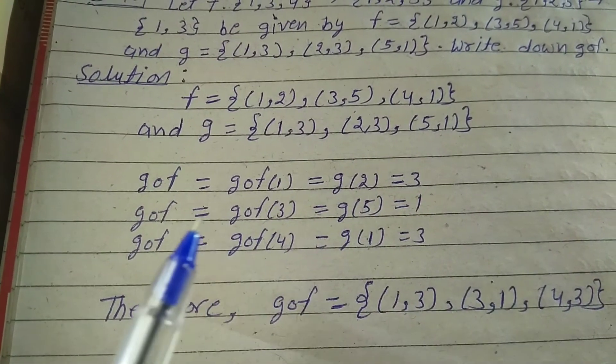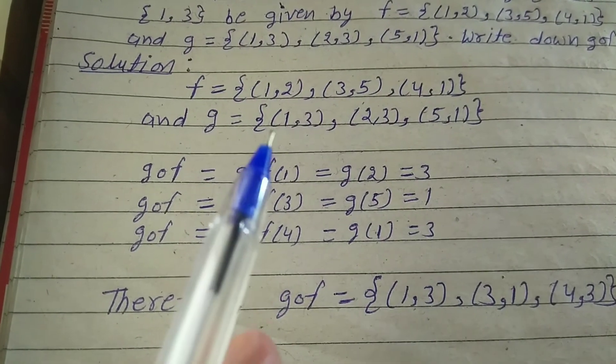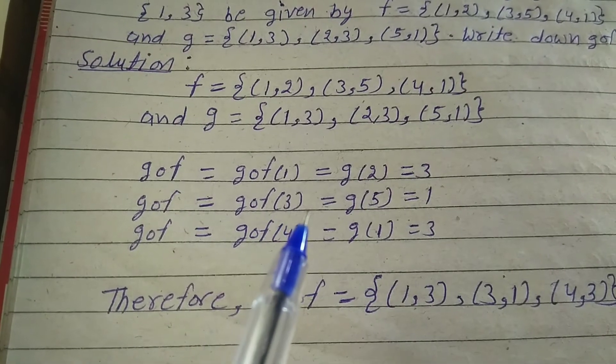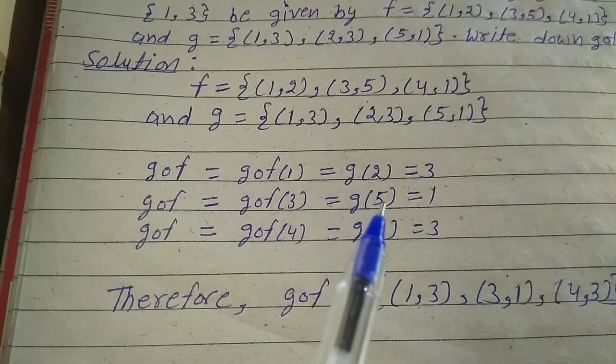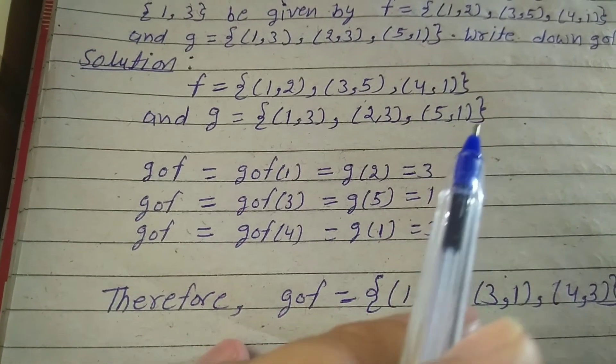GoF(3): value of 3 is 5, so G(5) is equal to 1, because G(5) value is 1.